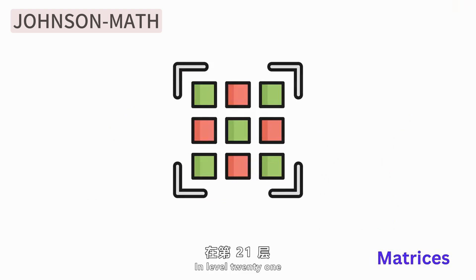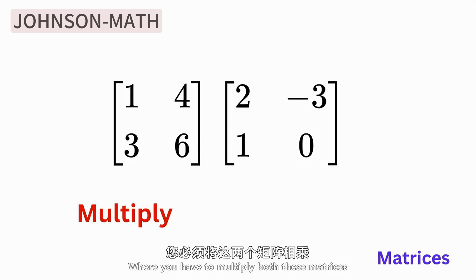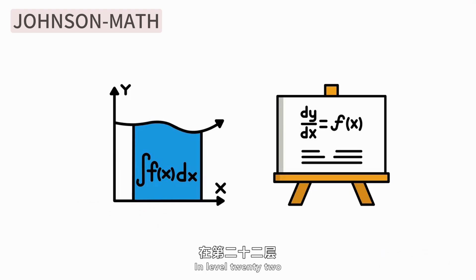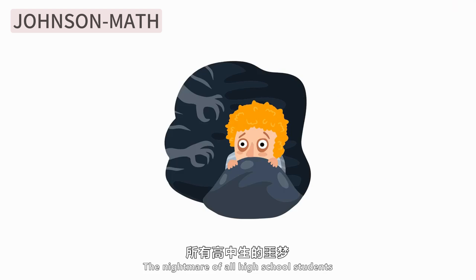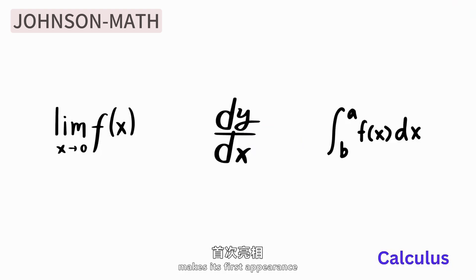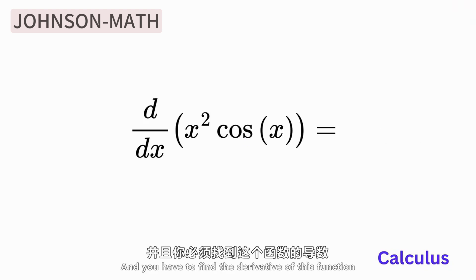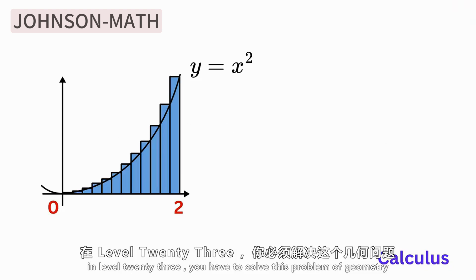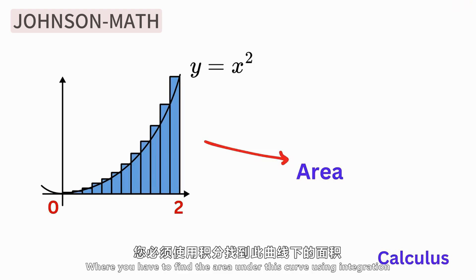In Level 21, you'll find matrices entering the game. You have to multiply these two matrices. In Level 22, the foundation of advanced mathematics, the nightmare of all high school students, calculus makes its first appearance. You must find the derivative of this function. In Level 23, you must solve this geometry problem. Use integrals to find the area under this curve.